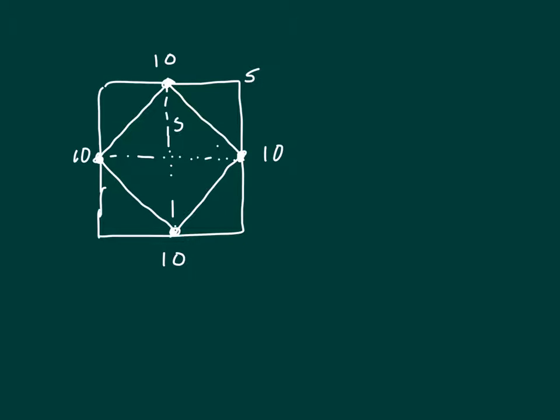This would be 5 from here to here, a distance of 5, and from here to here is a distance of 5.